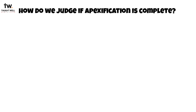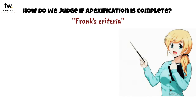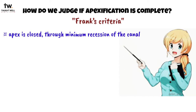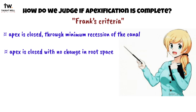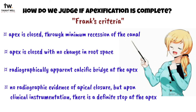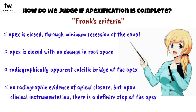Now, how do we judge if apexification is complete? Frank gave a list of conditions for apexification to be complete, called Frank's criteria. According to him, apexification is complete if the apex is closed through minimum recession of the canal, or if the apex is closed with no change in root space, or if there is a radiographically apparent calcific bridge at the apex. Also, even if there is no radiographic evidence of apical closure, but upon clinical instrumentation there is a definite stop at the apex, this indicates calcific repair, which means that apexification has taken place.